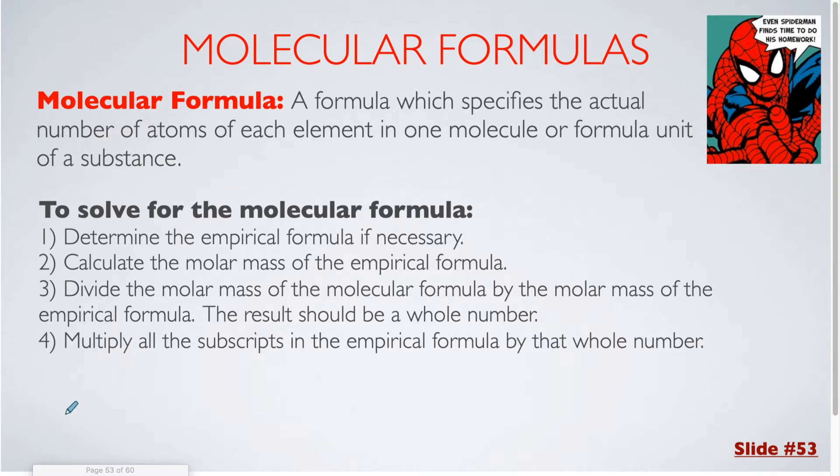To determine the molecular formula, you have to find the empirical formula first. For some problems you'll be given the empirical formula at the start. For others you might have to determine the empirical formula just like we did in the previous video. Then you will need to calculate the molar mass of the empirical formula. You will divide the molar mass of the molecular formula by the molar mass of the empirical formula. The result should be a whole number. You will then multiply all the subscripts in the empirical formula by that whole number.